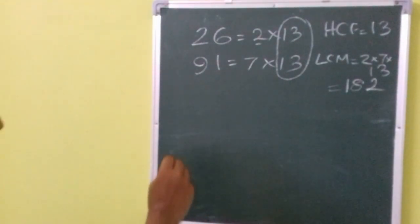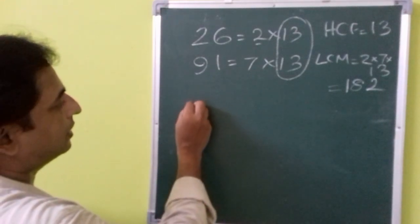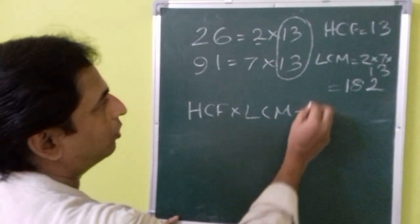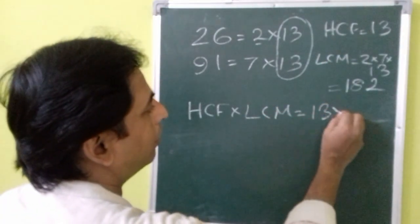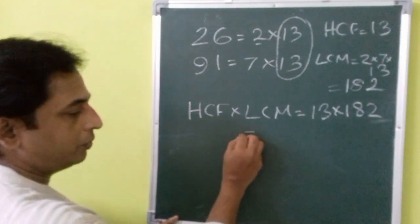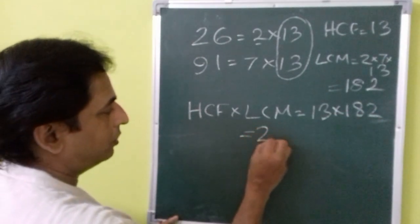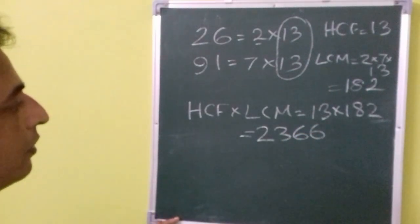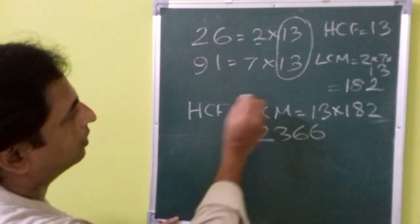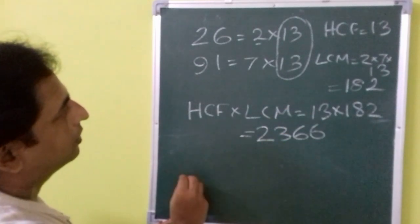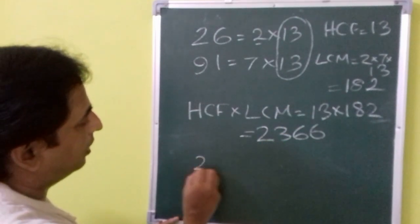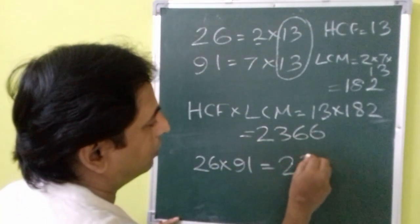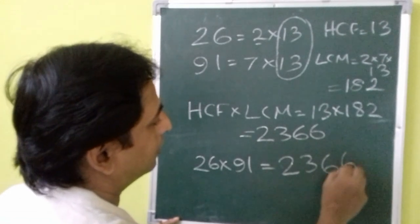Then what will be the HCF multiplied by LCM? So that will be 13 multiplied by 182 which is equal to 2,366. And you need to check whether the product of numbers is also the same. So you can multiply 26 times 91, you are going to get the same number 2,366.